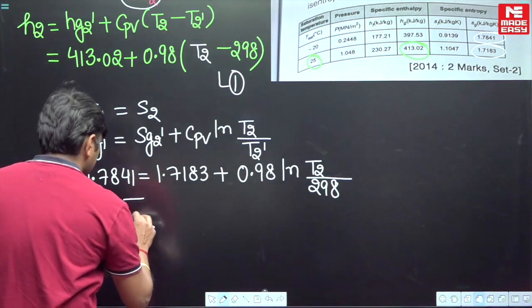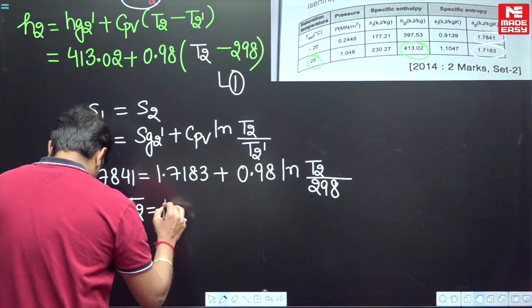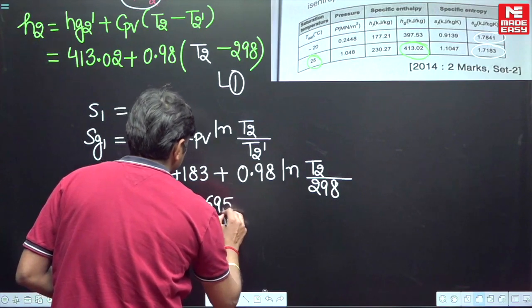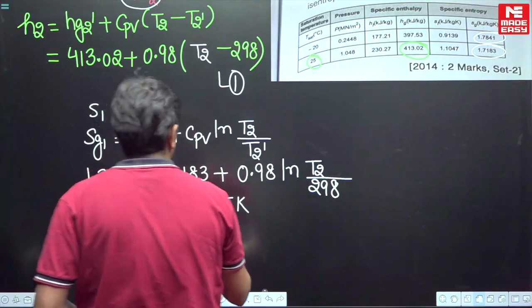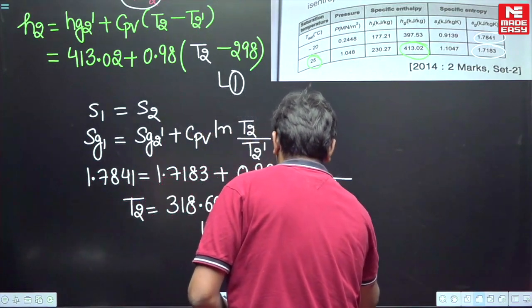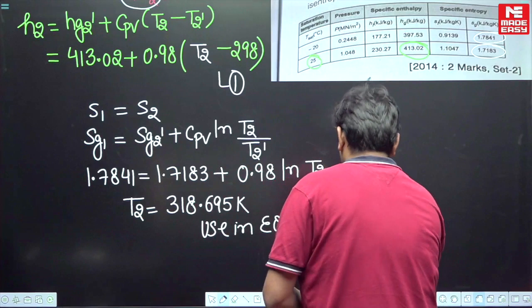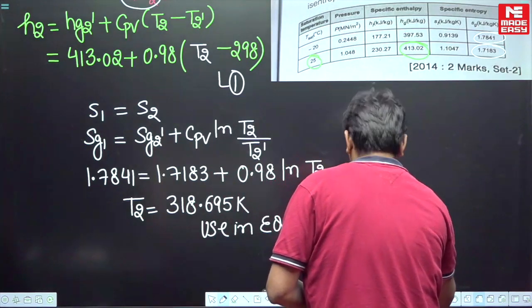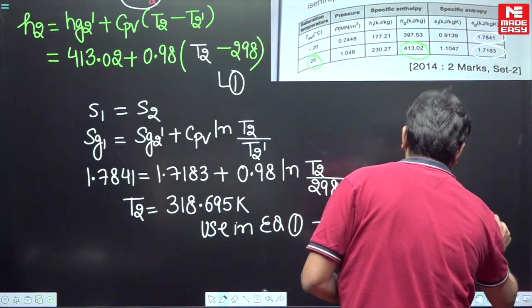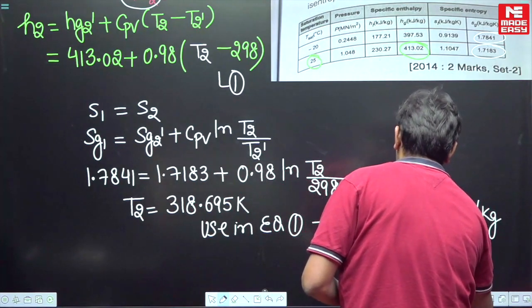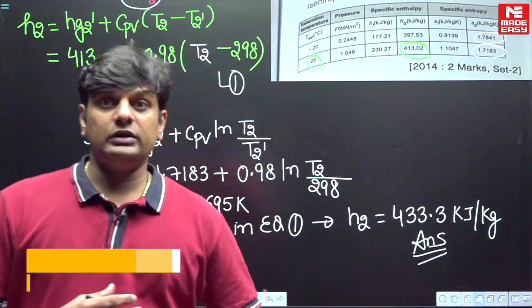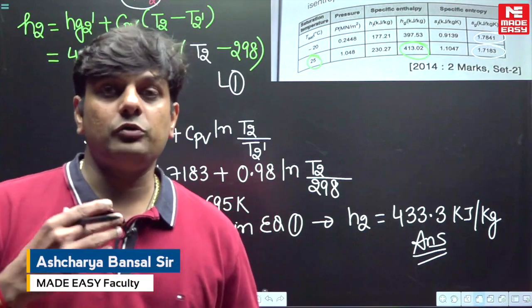Capital T is the temperature in Kelvin. So from this you will get T2 as 318.695 Kelvin. So now use in equation number one. From this you will get H2 as 433.3 kilojoule per kg. So this is your answer.